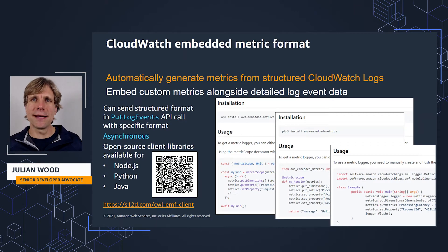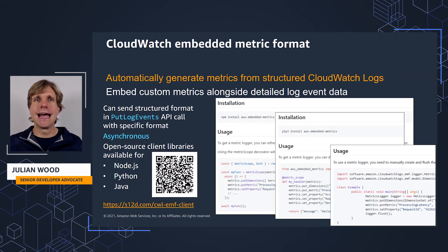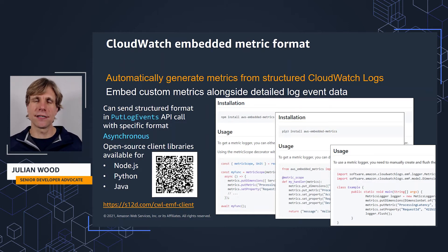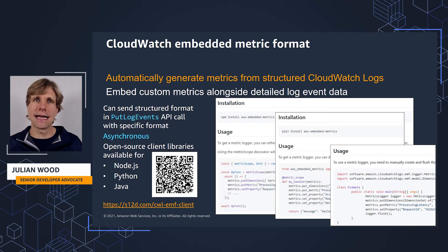To help with this, AWS has released the Embedded Metrics format to publish logs using a specific format. This allows you to embed custom metrics, which may be part of the event payload, alongside more detailed log event data. These are then sent asynchronously rather than synchronously without an API call, and they get automatically exported as metrics, so you don't need to build any additional processing on your part. They can also be used for dashboards and alarms too.